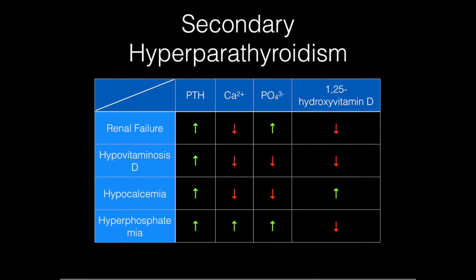So PTH tries to bring calcium back up, but it's not quite back to normal yet, and the net result is the set of labs you see. Next we have isolated deficiency of vitamin D. This could be dietary, from lack of sun exposure, or in someone with steatorrhea. As a little exercise, we'll go through some key patient populations they might use to frame the question and then ask for lab values.